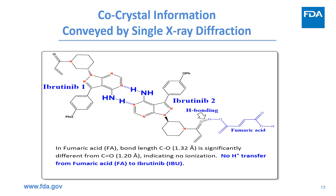Single crystal X-ray diffraction showed that each crystal lattice contains a homodimer of Ibrutinib connected via hydrogen bonding between the amino group on each molecule. This Ibrutinib homodimer forms another hydrogen bonding with fumaric acid. There is no proton transfer from fumaric acid to Ibrutinib base, which is supported by the significant difference in bond lengths of the COO single bond and COO double bond in fumaric acid, which are 1.32 Å and 1.20 Å respectively.